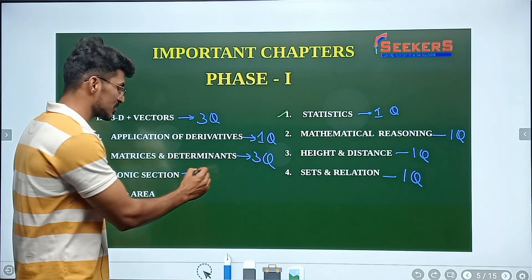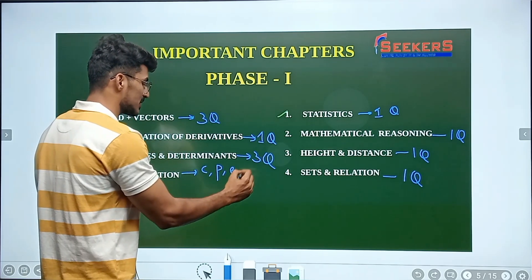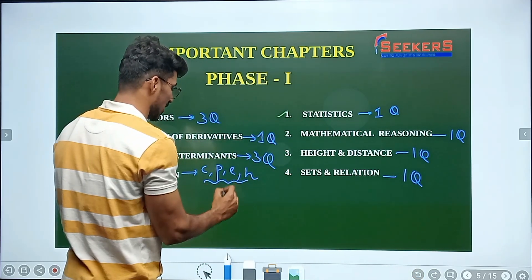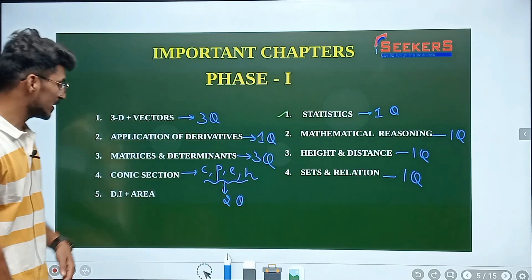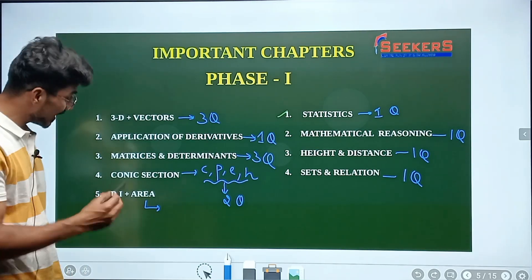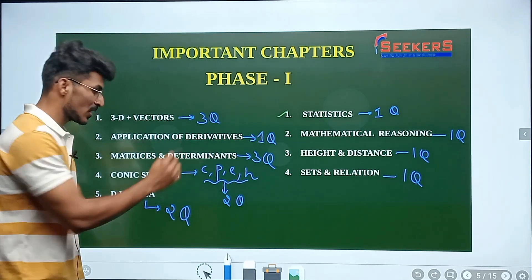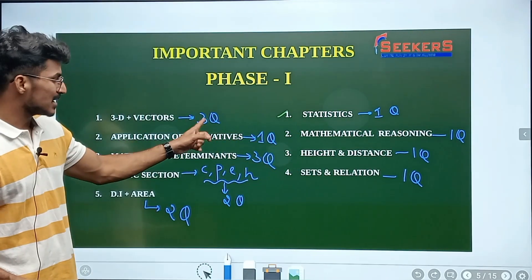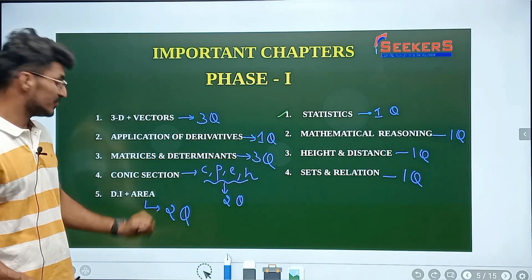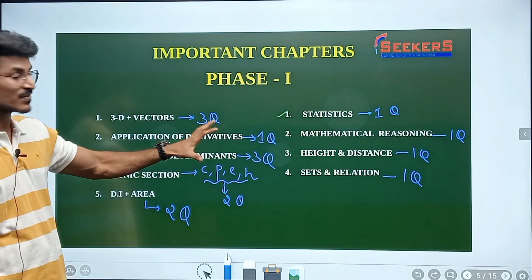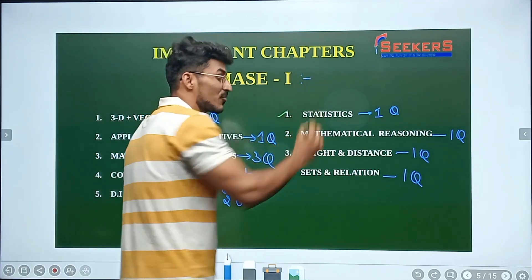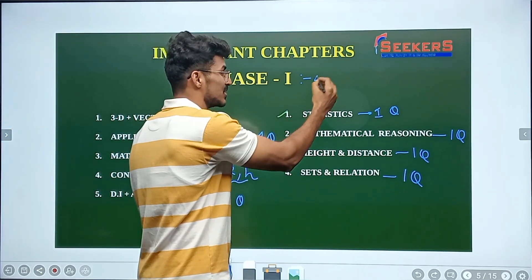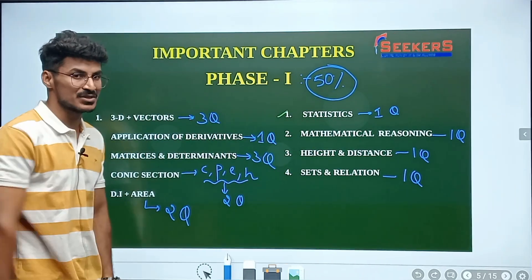Under conic sections — circles, parabola, ellipse, and hyperbola — you could expect two questions. Definite integration plus area under curves: again two questions. So if I look at this slide, one, two, three, four, seven, eight, eleven, thirteen, and fifteen — fifteen questions from slide one. Out of thirty questions, fifteen are covered by these nine chapters, which means fifty percent of the syllabus covered from these nine topics.